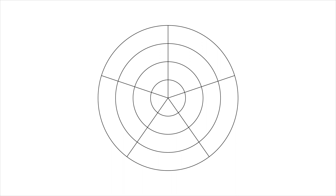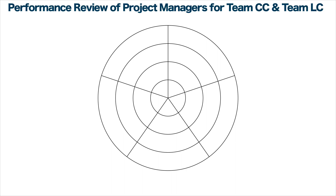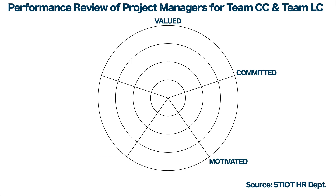With the team member responses in hand, you decide to make a radar chart for the project managers currently under review. At the top of the chart is the title, along with the data source at the bottom. The four rings on the radar chart represent the four-point Likert scale. The five points on the radar chart are the team members' experiences, labeled: valued, committed, motivated, equipped, and informed.